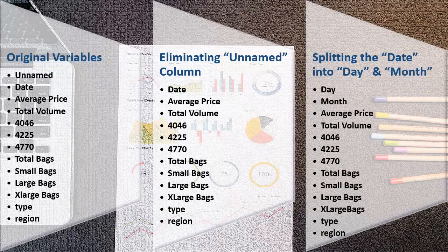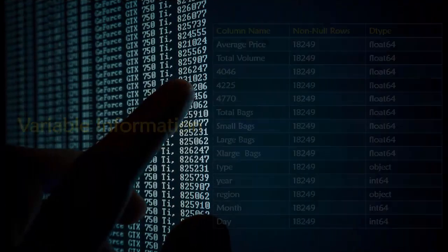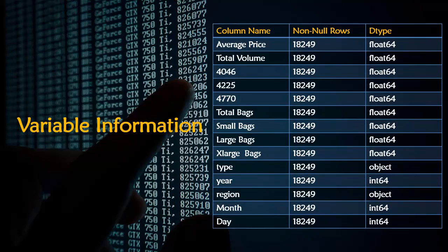Now since the unnamed column was not meaningful, we have eliminated the unnamed column. And the variable date has been split into two more columns. One column is day and the other column is the month. Now here is a table about information on all the variables in our data. Now luckily we didn't have any missing values in our data.